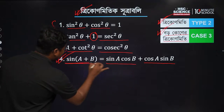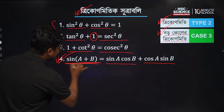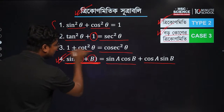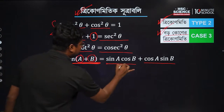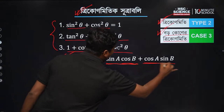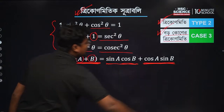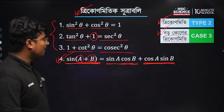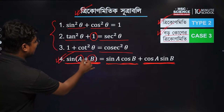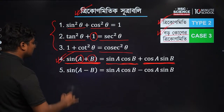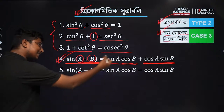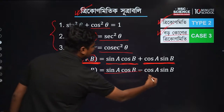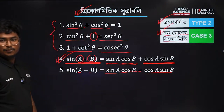Sin(a + b) gives us the two angles formula: sin a cos b plus cos a sin b. If a plus b is replaced with a minus b, then sin(a − b) equals sin a cos b minus cos a sin b.